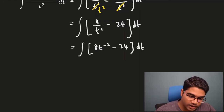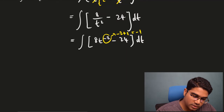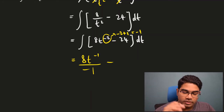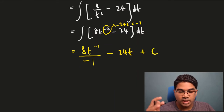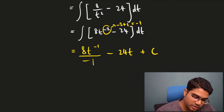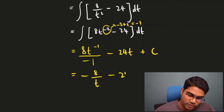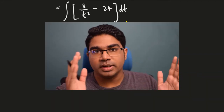Now we can integrate. As usual, negative 2 plus 1 equals negative 1. So this gives us 8t to the power of negative 1 divided by negative 1 — don't forget to divide by the new power — minus 24, which is just a number, so when we integrate with respect to t we get 24t. Don't forget the constant of integration plus c. This simplifies to negative 8 over t minus 24t plus c. This is how we do integration when we have a combined fraction — just split it into individual fractions so we have individual terms to apply the formula.